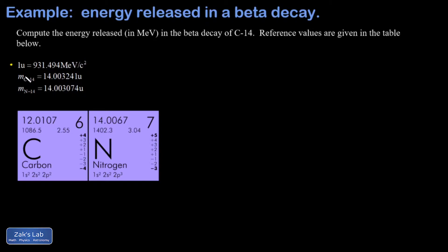We also have the mass of the C14 atom, and we need to note carefully that we're talking about the entire atom including the electrons. That can be inconvenient for nuclear physics, but that's how these tables are normally arranged — so the mass given is the nucleus plus its electrons. Similarly, I'm given the mass of the N14 atom including all of its electrons.